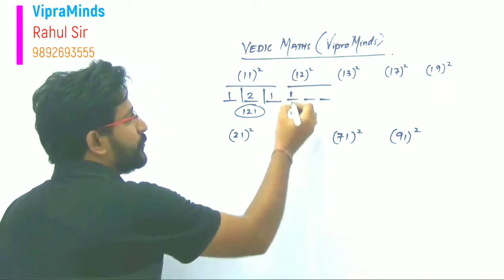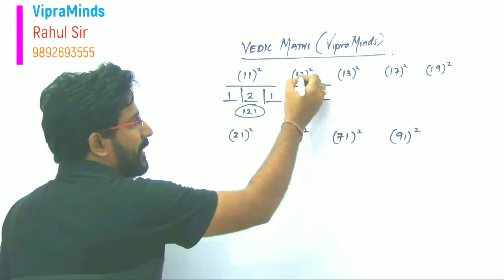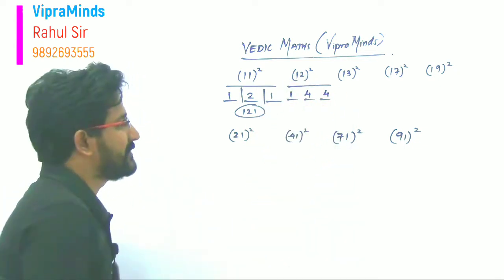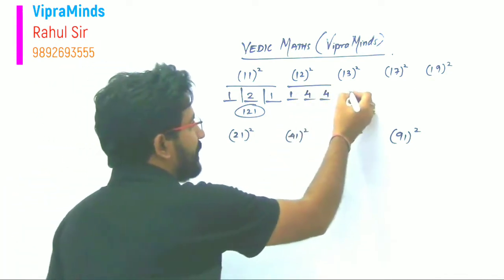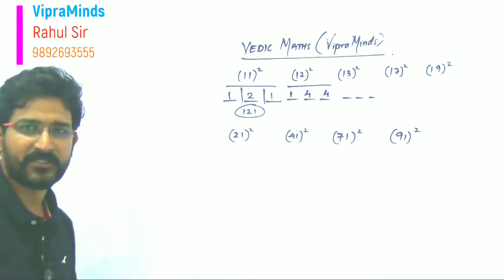So the third block is the unit place square. So two square is four. So in second block, one plus two that is three. Three plus three is six. So second block is six and last block is four. So your answer is 144.